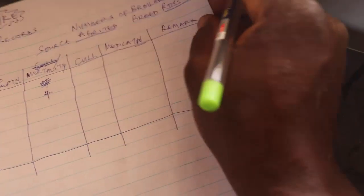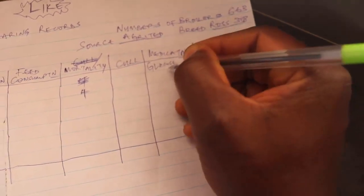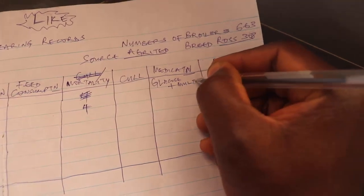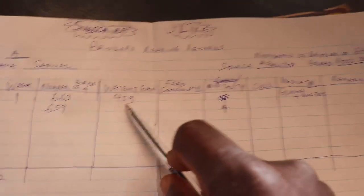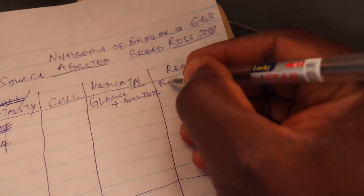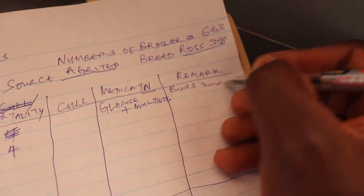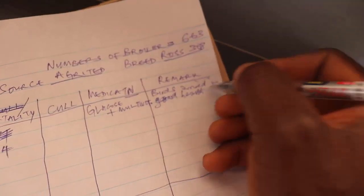For medications on the first day, birds normally take multivitamins and glucose, so you write those in. For the remarks column, you can write something like 'Birds arrived in good health' as your observation for Day 1.